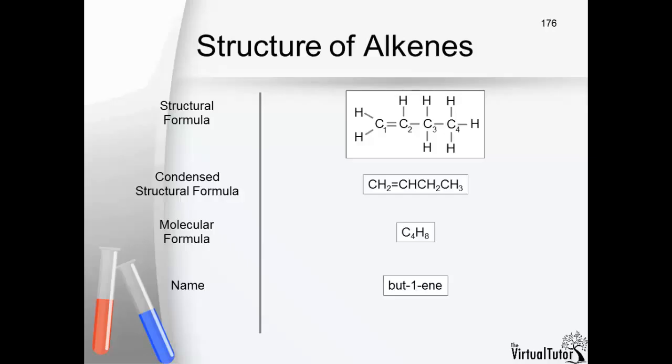However, for alkene molecules larger than propene, it is possible for the double bond to be in more than one position. It is therefore necessary to indicate the number of the carbon atom where the double bond begins in the name, in this case carbon atom 1.